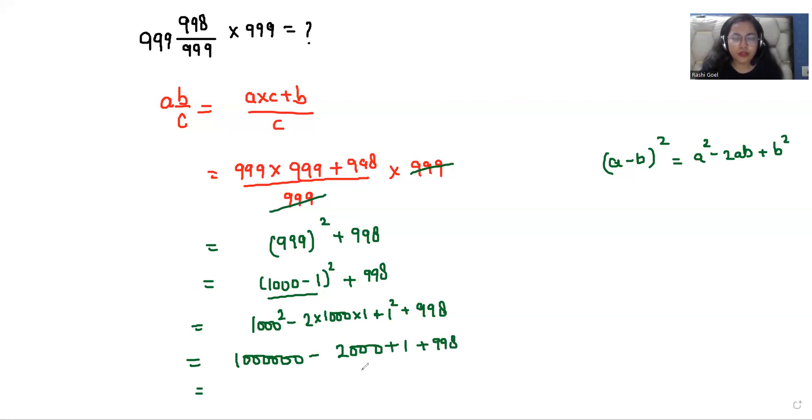So if we subtract 2000 from it, we get 998,000 plus 998 plus 1 is 999. So if I add this I'll get 999,999. I hope you like the solution.